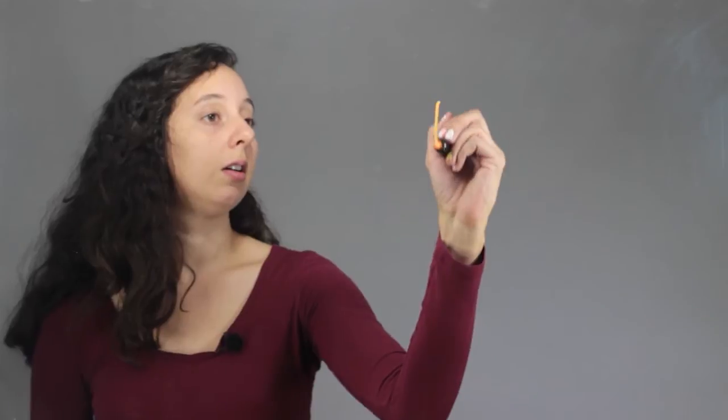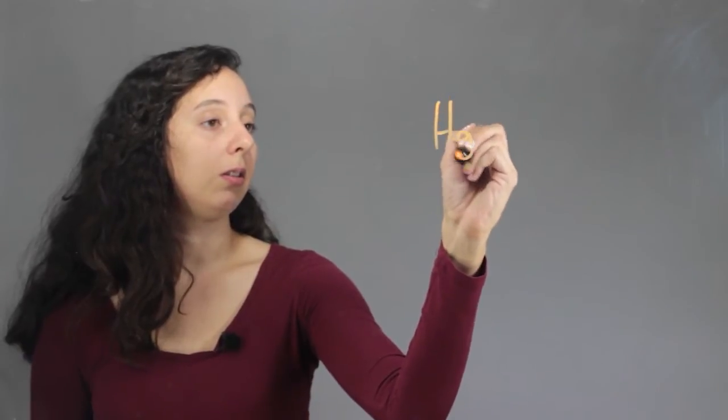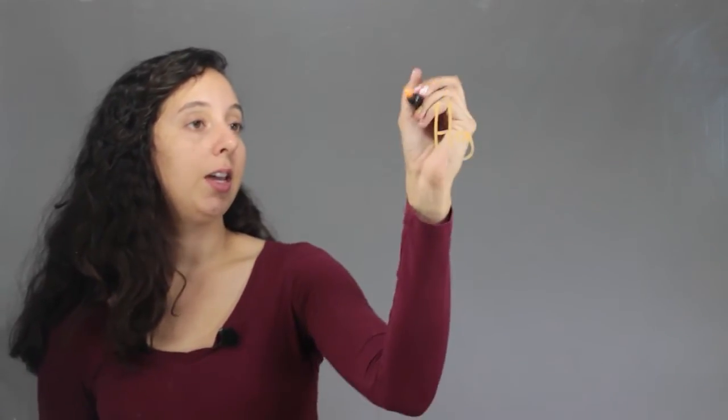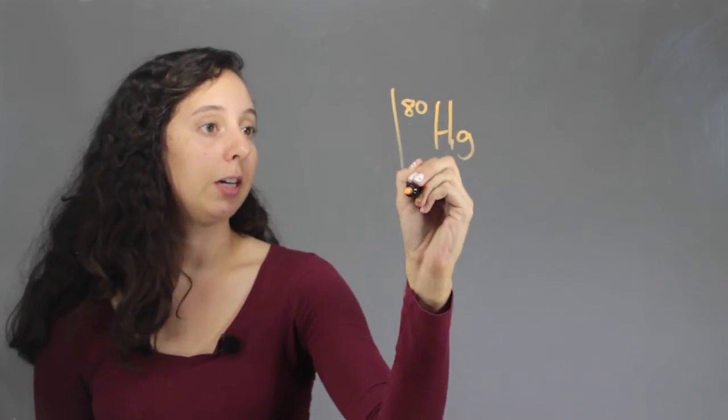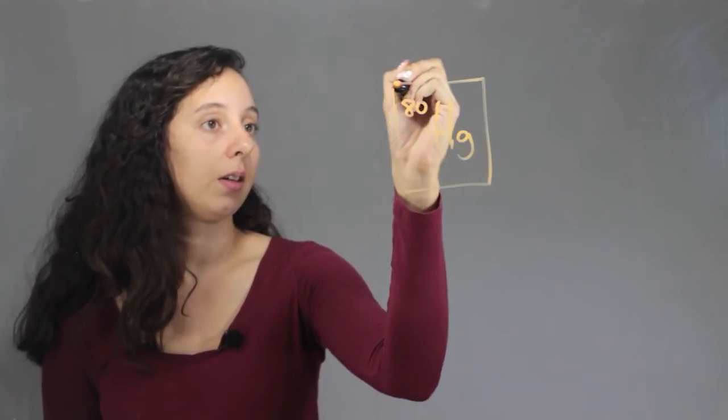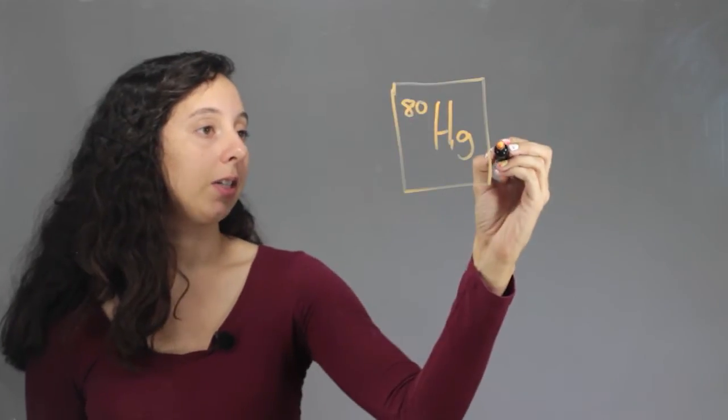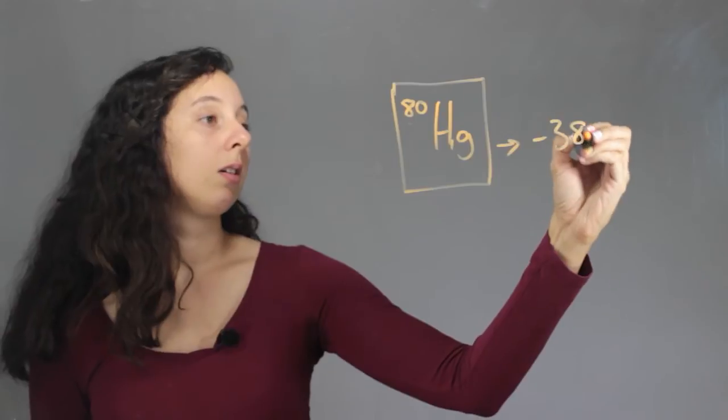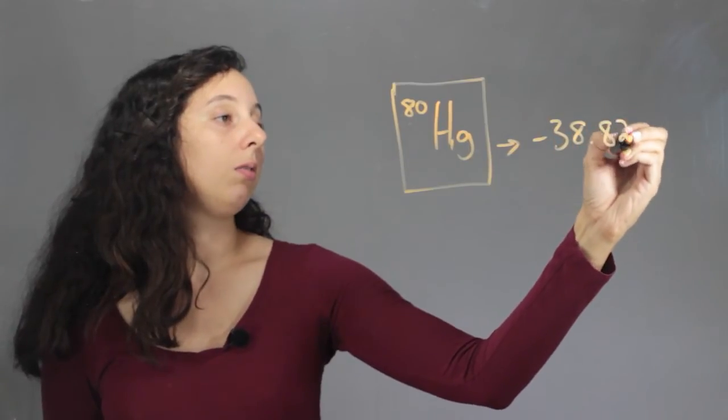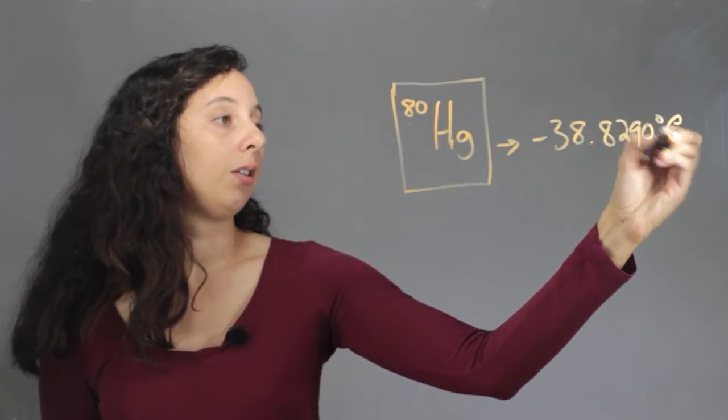So mercury, atomic symbol Hg, is element number 80 on the periodic table and its melting temp is negative 38.8290 degrees Celsius.